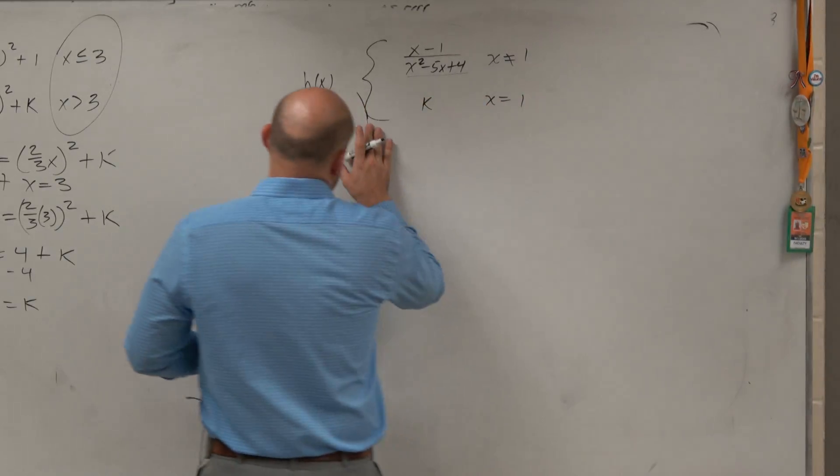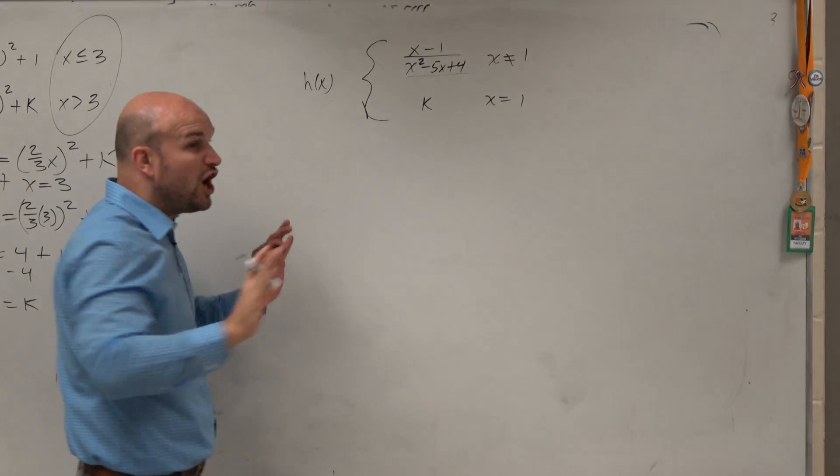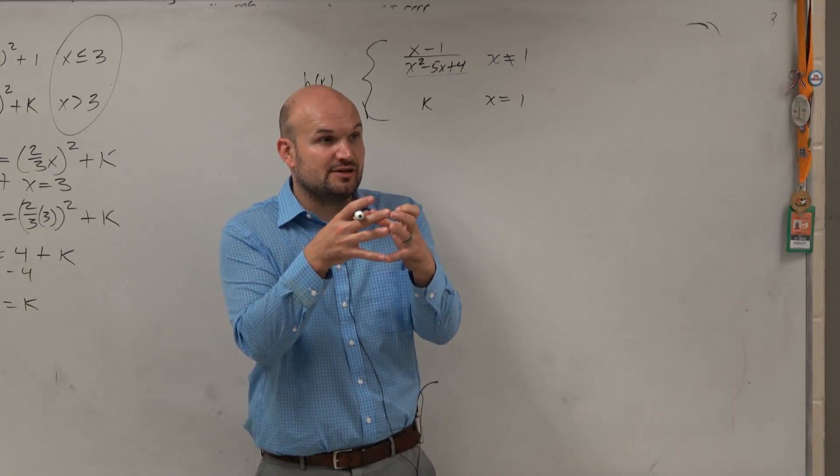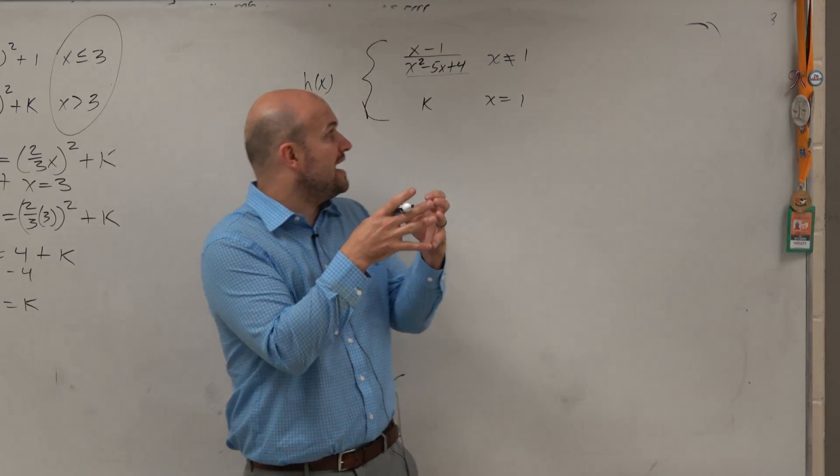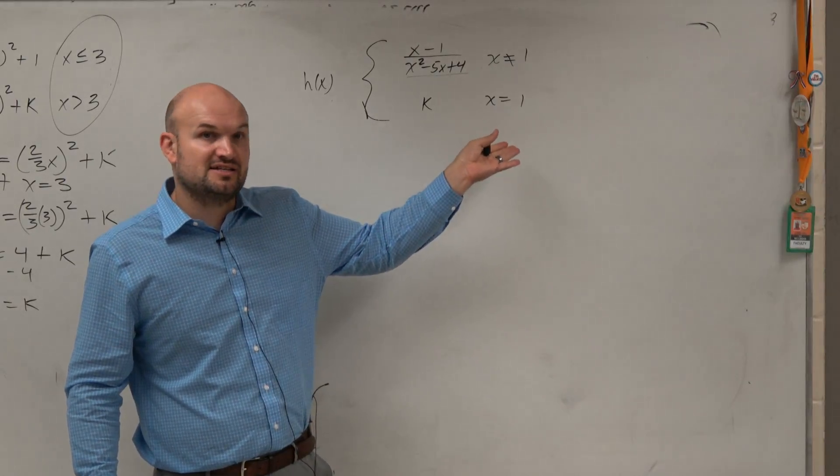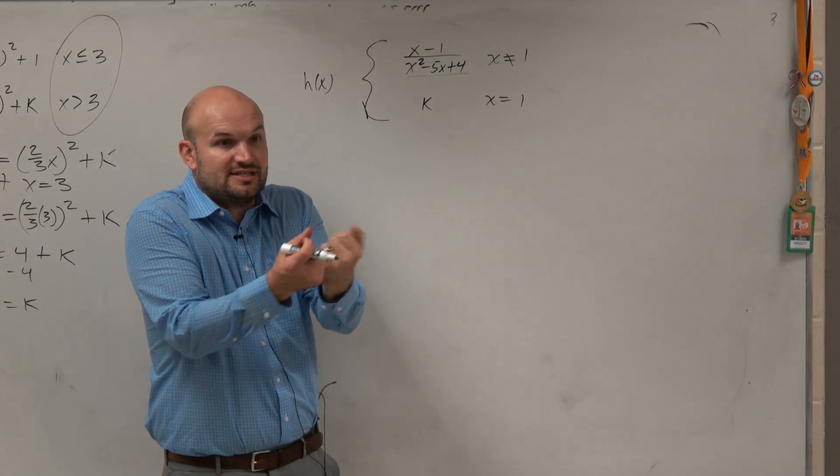But either way, so we need to find the value of x. Now, regardless, we're going to find the same process, right? If these functions are continuous or not, they're going to be continuous or not at what value? x equals 7, x equals 2. What value are they going to be either continuous or not continuous at?